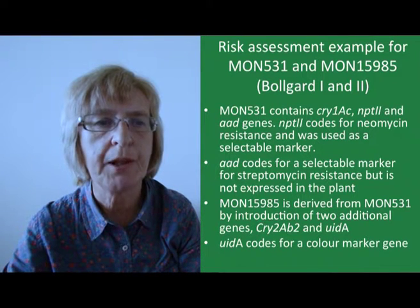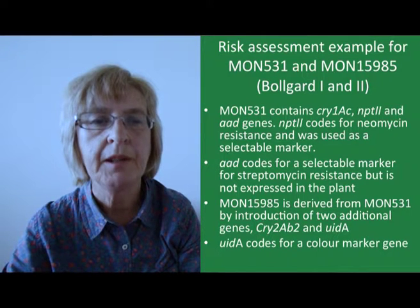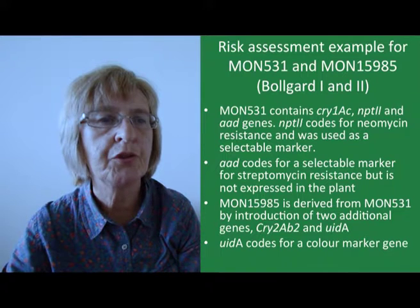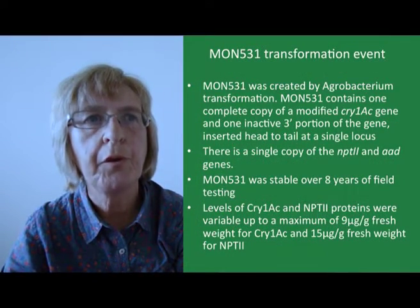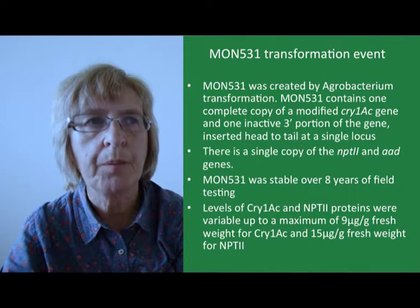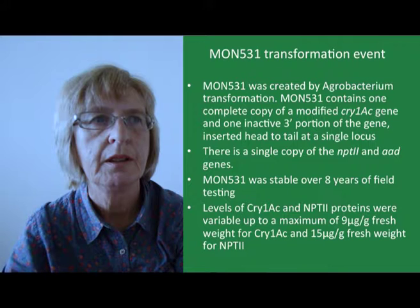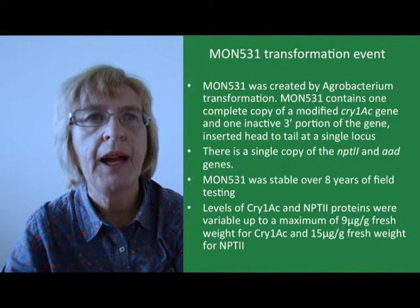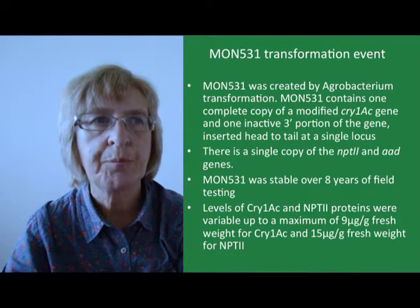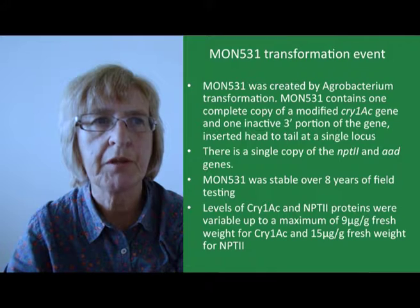MON15985 was created through a second transformation event on top of MON531, so it contains the same genes as MON531, but additionally the Cry2AB2 gene and also a gene coding for a scorable colour marker. MON531 was created through Agrobacterium transformation and contains one copy of the Cry1AC gene modified for expression in plants, as well as an inactive 3' portion of the same gene inserted head to tail at a single locus. Single copies of the NPT2 and AAD genes are also present. The event was shown to be stable over 8 years of field testing in the United States. Expression levels were variable — up to 9 micrograms per gram fresh weight for Cry1AC and 15 micrograms per gram fresh weight for NPT2.